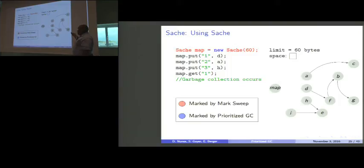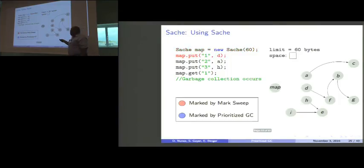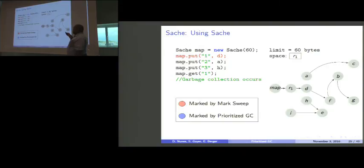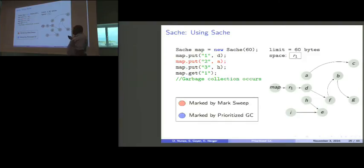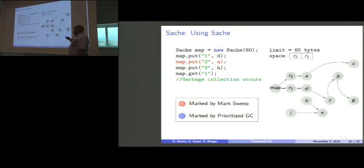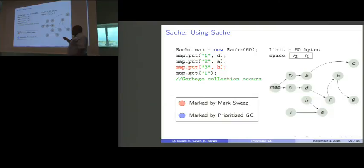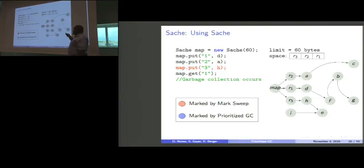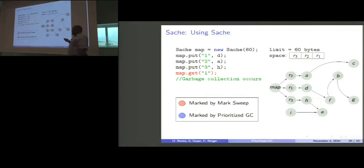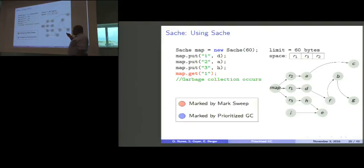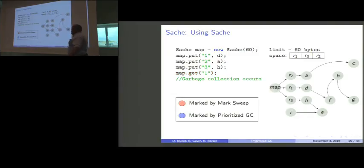Now we have an example of how we would use this sache in some program. We're just going to make a sache with a limit of 60 bytes, put three things in it, get something back, and a GC will happen. On the right, we have the current state of the heap. I'm going to make a distinction of the items that are marked by the marks, the regular mark sweep, and the items that the prioritized GC specifically marks itself. We start off to make this map for 60 bytes. Now we know that this space has a limit of 60 bytes. Currently, it's empty because we haven't put anything in it. We're now going to put in the key one with the value D, and D is a root to some data structure, this list. We're going to make a new prior reference called R1, put that into space, and associate it with D. Now, we move on to the next item, which is key two value A. We're just going to do the same thing. We're going to make a reference for that, R2, associated with A. We're going to put the R2 at the head of the space, because now that has highest priority, because it's newest. Then, we go to the key three value H. We do the same thing, make a new reference, set the head of the space. Finally, we get the value associated with one. That doesn't change the heap, but it forces R1 to be at the front of the space, because it's the most recently accessed item. Then we do some work, and a garbage collection occurs.